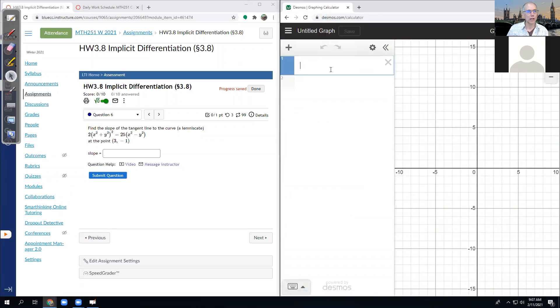Can it handle the Lemniscate? Two times x squared plus y squared, all squared, equals 25 times x squared plus y. That's cool.